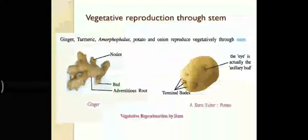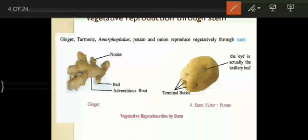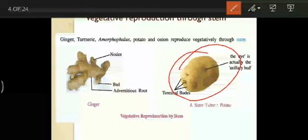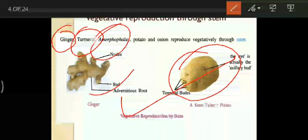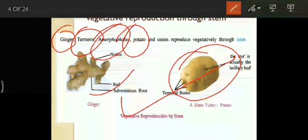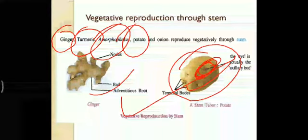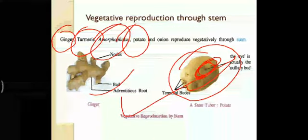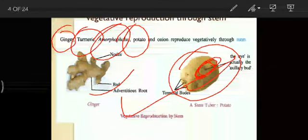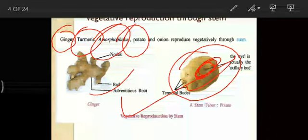Coming to modification of stem: vegetative reproduction in stem. Potato tuber is a well-known example. In ginger, you find nodes and internodes. Rhizomes — ginger, turmeric, and Amorphophallus. Potato forms a tuber. So for stem modification: potato tuber, and rhizomes in ginger, turmeric, and Amorphophallus. We already discussed how turmeric vegetative reproduction differs from ginger and from potato.